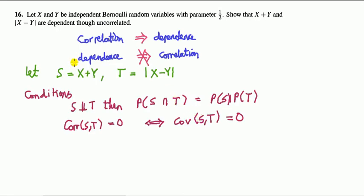To set up this question, let's set up the notation. Let the new random variable X plus Y be called S, and the absolute difference of X and Y be called T. So we have to show that S and T are dependent, but the correlation between S and T is zero. We need conditions to check each of these things. So first, independence — S independent of T, using this symbol for independence.